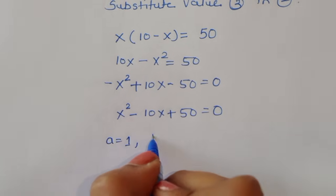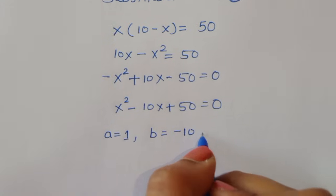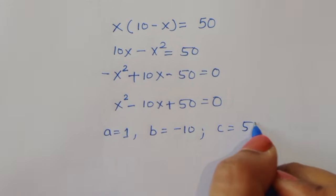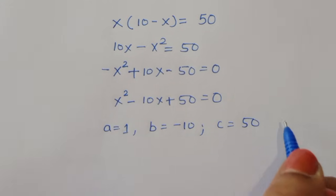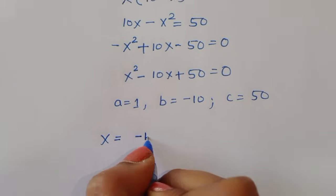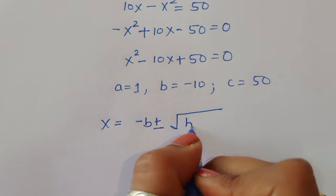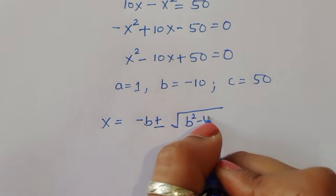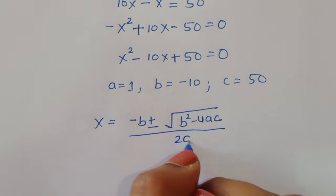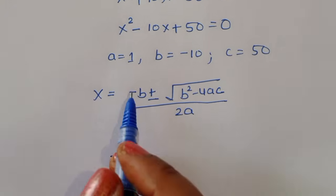The coefficient of x squared is a equals 1, b equals minus 10, and c equals 50. We now apply the quadratic formula: x is equal to minus b plus or minus the square root of b squared minus 4ac, all divided by 2a.